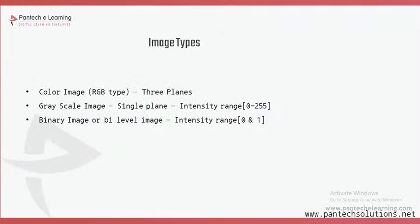Now we move on to image types. There are three different types: one is a color image, another is a grayscale image, and the third is a binary or bi-level image. Color images are the most familiar — it is a combination of three different channels: RGB, which stands for Red, Green, and Blue.